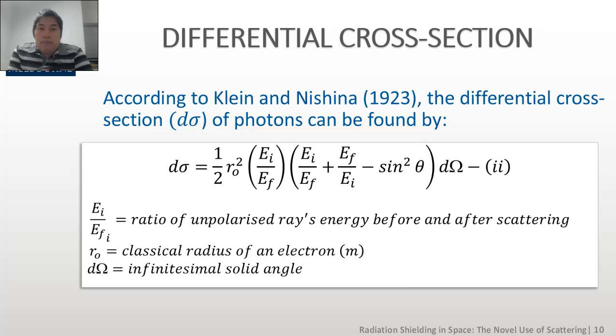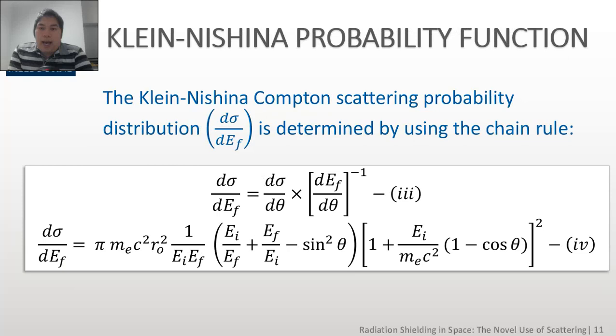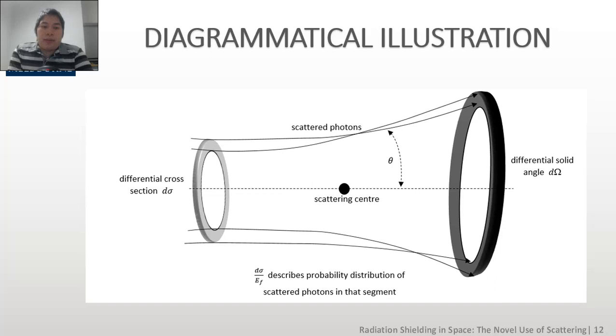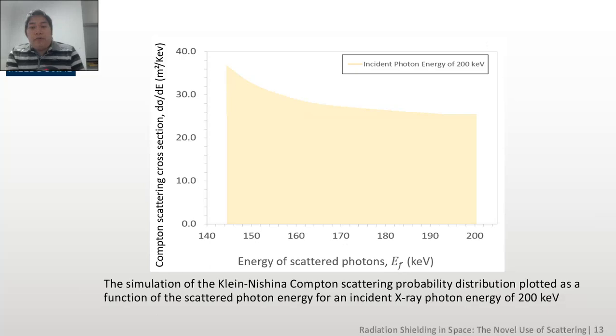Then, by manipulating the equation for the differential cross-section d-sigma, discovered by Klein and Nishina in 1929, and using chain rule, the differential d-sigma by d-EF is given by equation 4. And this is known as the Klein-Nishina probability function for Compton scattering. If the differential cross-section d-sigma is the angle that captures the amount of flux through a solid angle, the differential d-sigma by d-EF describes the probability for which the highest proportion of scattered photons may be found.